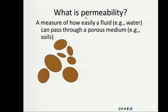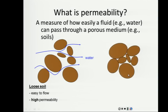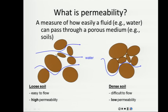Permeability occurs when you have a soil with empty spaces, also known as voids, and water can easily pass through those spaces. This is a loose soil — it's easy to flow and has high permeability. Remember compaction from the last chapter? One of the objectives of compaction is to reduce voids, making the soil more dense. As we reduce the voids, we also reduce the permeability. In dense soil, the fluid is not as easy to pass through — we refer to that as a soil with low permeability.